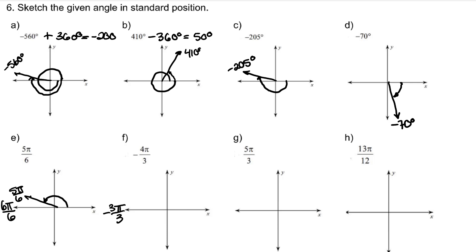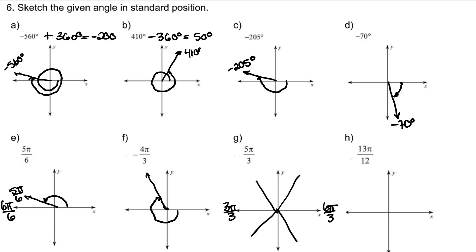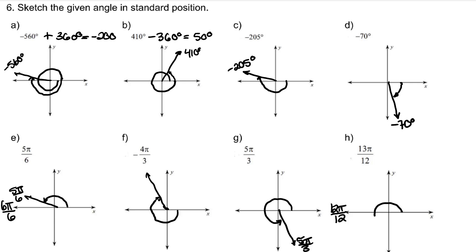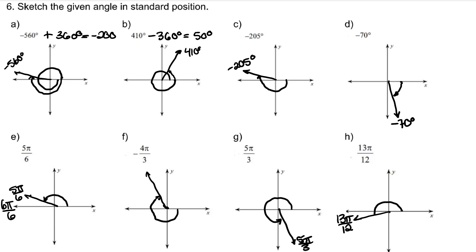For negative 4 pi over 3 in the negative direction, pi is negative 3 pi over 3, so we want to go 1 more pi third past that. For 5 pi over 3 in the positive direction, pi is 3 pi over 3 and 2 pi is 6 pi over 3, so 5 pi thirds is 1 third short of a full circle. For 13 pi over 12 — pi is 12 pi over 12 — so we just go 1 pi twelfth past. And that's how we draw angles in standard form on a coordinate plane.